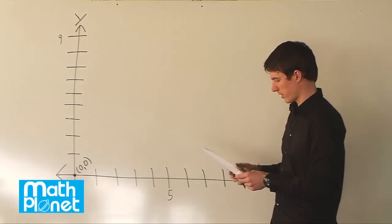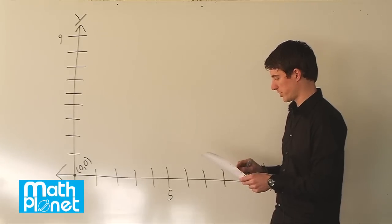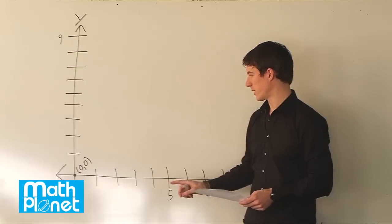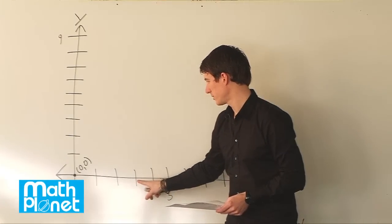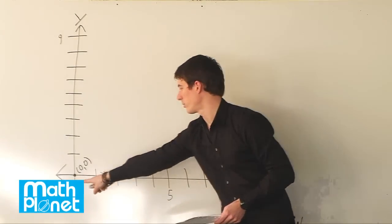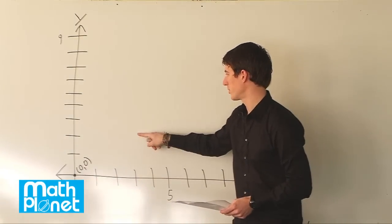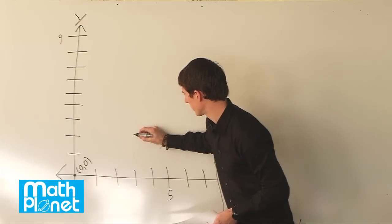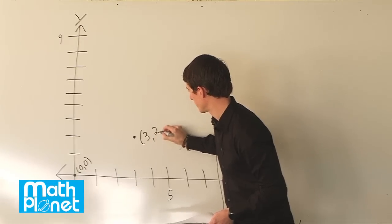On the next problem, the next point, we have 3, 2. 3, 2 is x equals 3 and y equals 2, so we go to the right 3 and then up 2. So that's right about here. 3, 2.